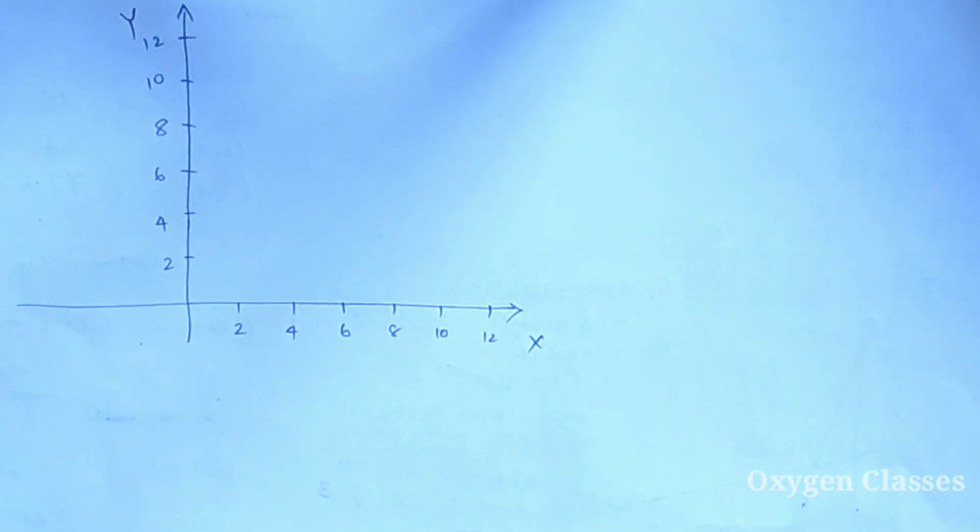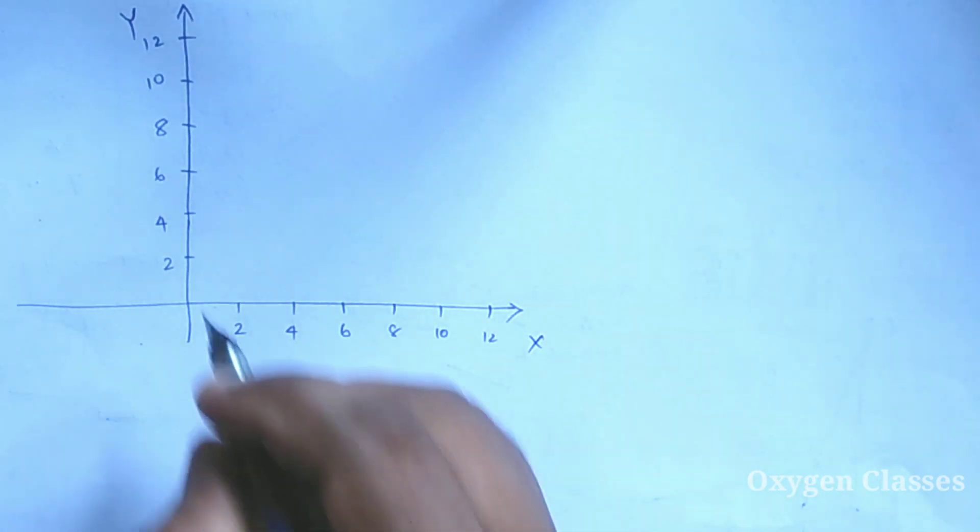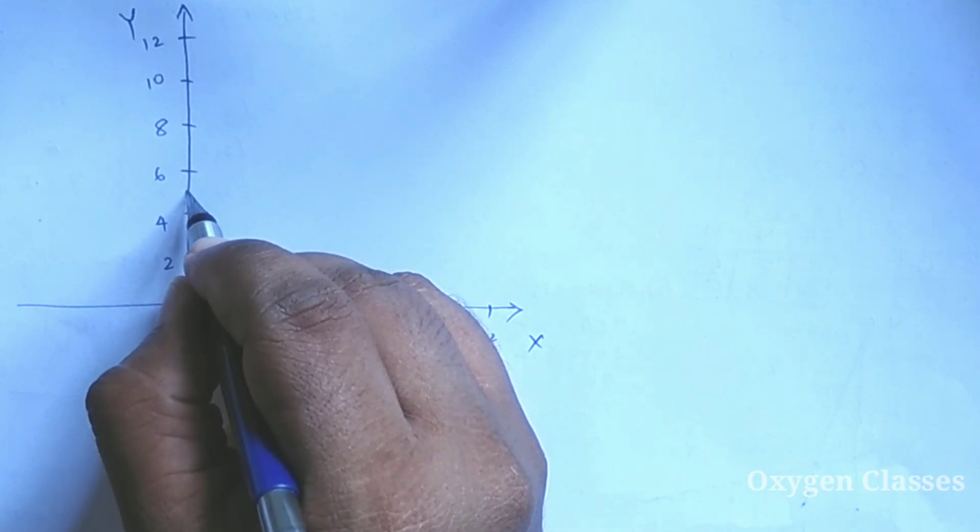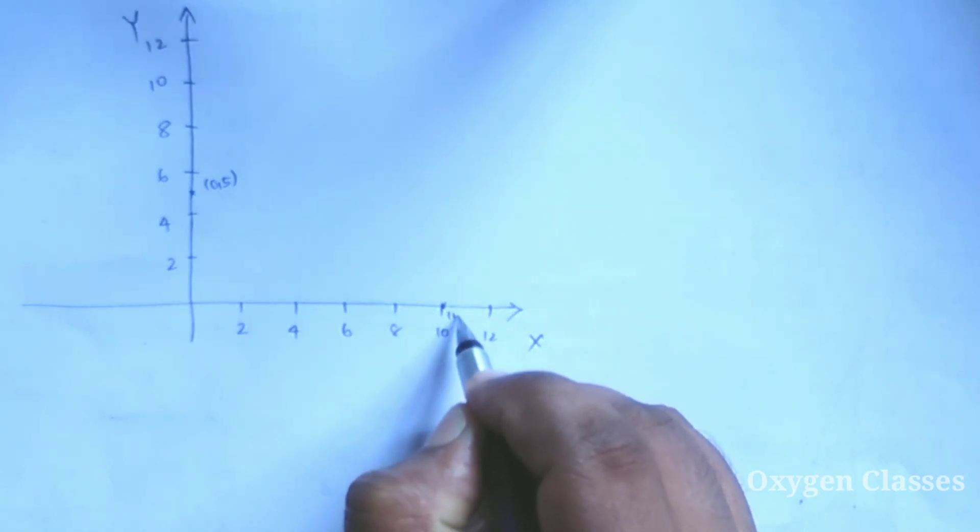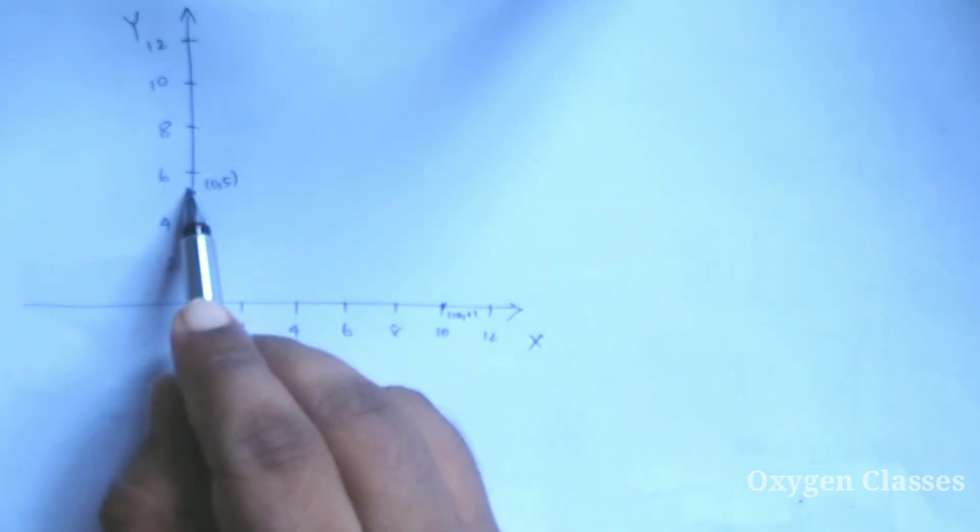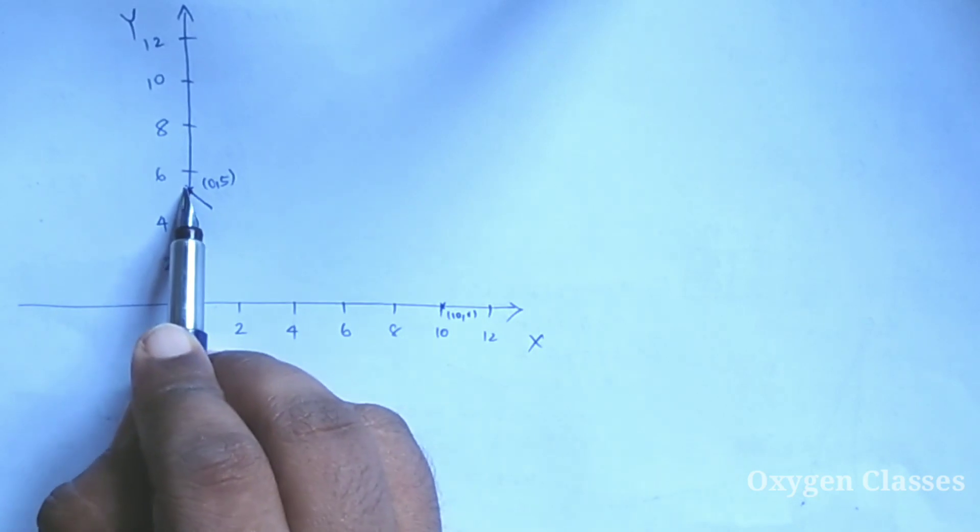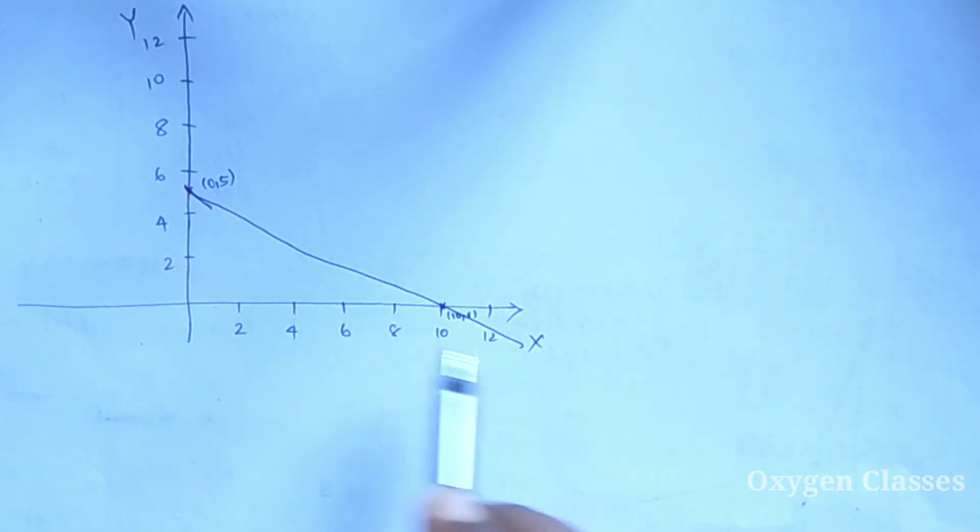First line, we need to mark the points: X equals 0, Y equals 5, that's (0, 5), and X equals 10, Y equals 0, that's (10, 0).